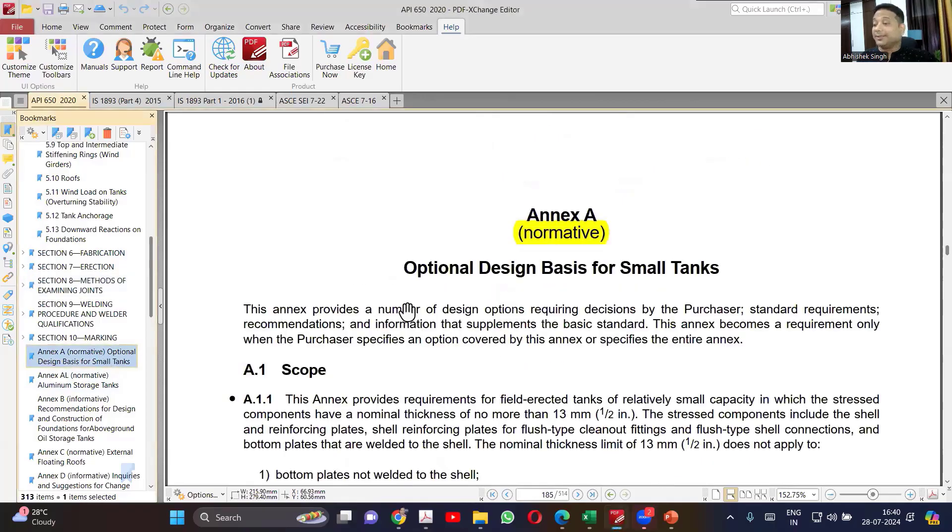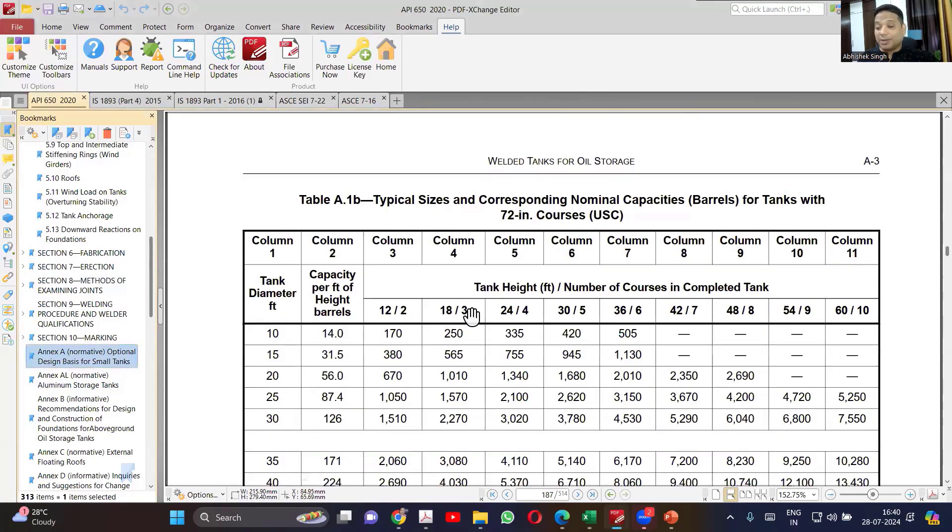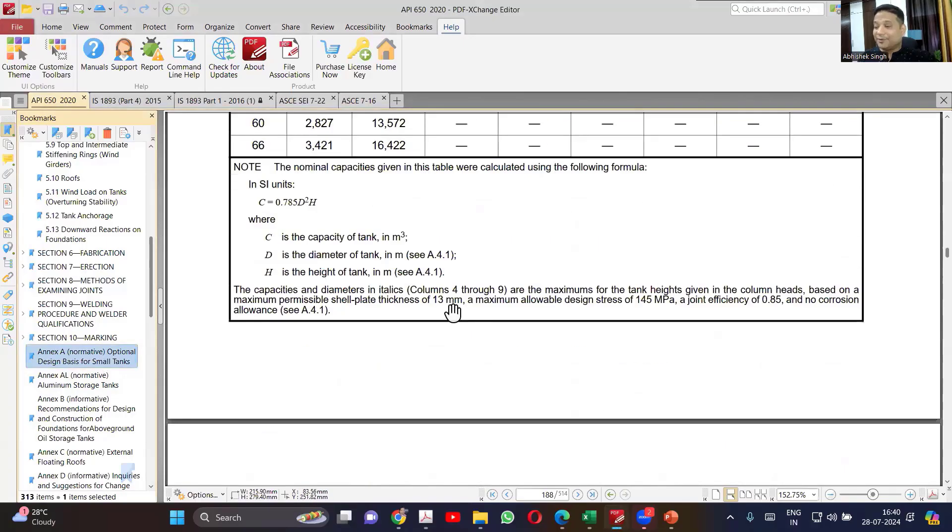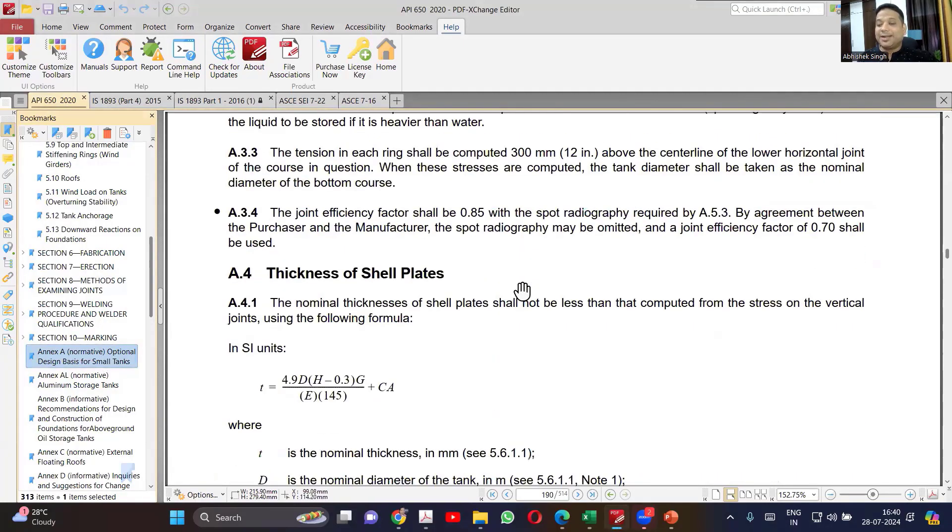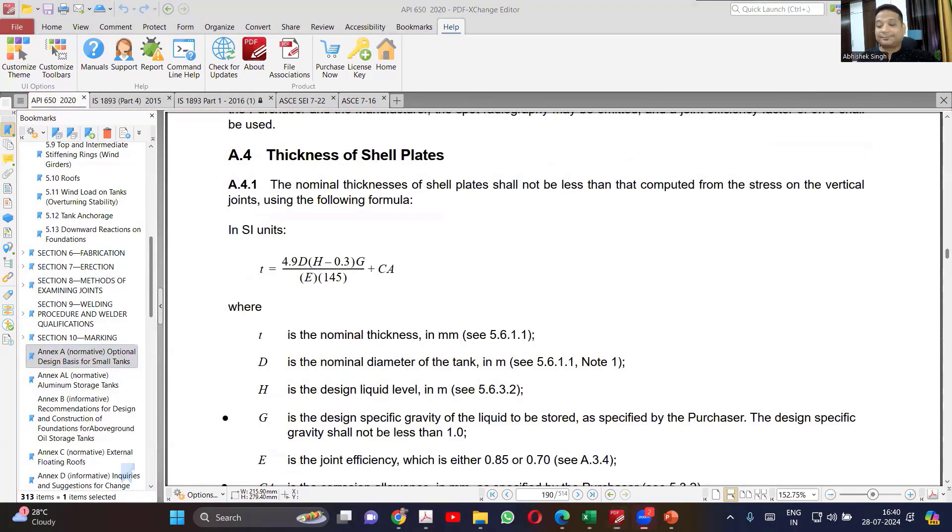But when I am using Annexure A, then there is a different formula. Same formula, only the joint efficiency will be added. You can see, it is exactly same formula, but you can see the joint efficiency coming into place.